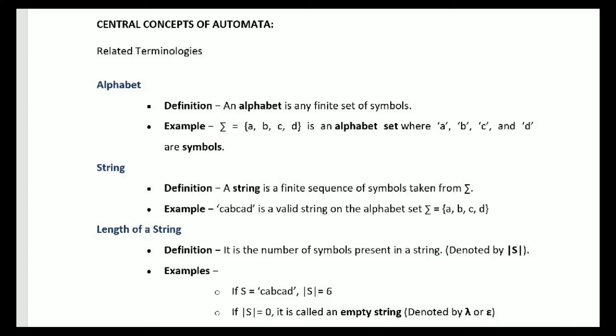The key terms are: alphabet, string, length of the string, Kleene star, Kleene closure, and plus. First, alphabet — in a language, the alphabets are the symbols used. For example, in English, we have a, b, c, d up to z. Whatever letters we use to write words in that language, those are called alphabets. So the inputs we can use from a language are its alphabets.